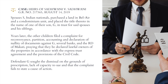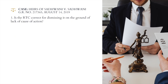Defendant G sought the dismissal on the grounds of prescription, lack of capacity to sue, and that the complaint fails to state a cause of action. The Regional Trial Court dismissed it based on lack of cause of action. First question: is the RTC correct for dismissing it on the ground of lack of cause of action? The answer is no — the RTC is not correct for dismissing the case on the ground of lack of cause of action.